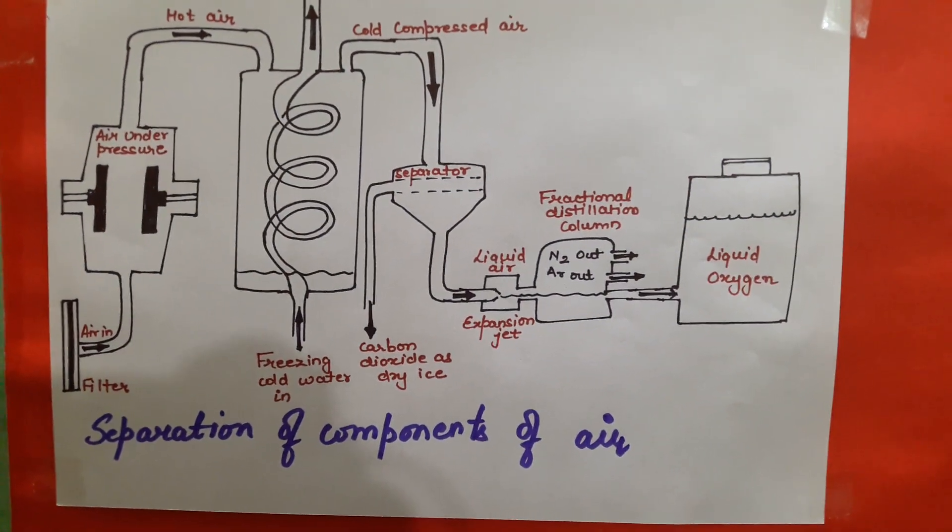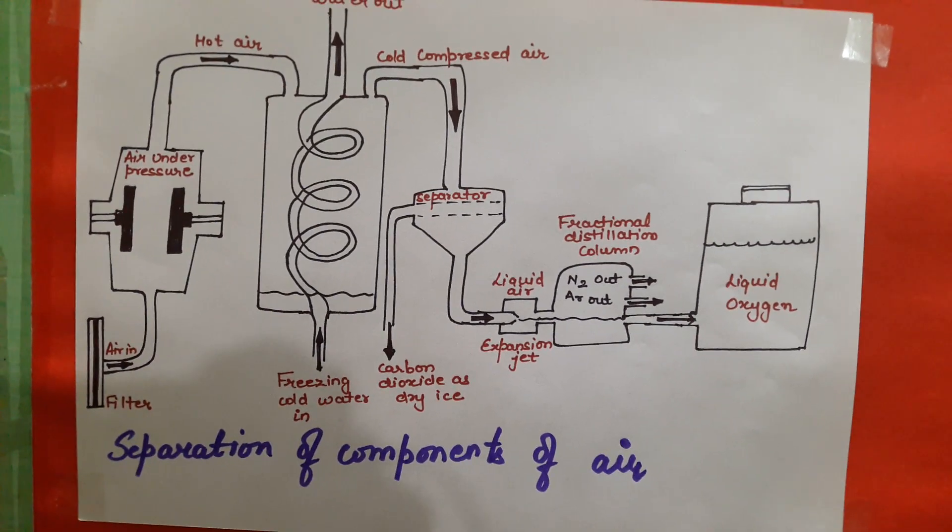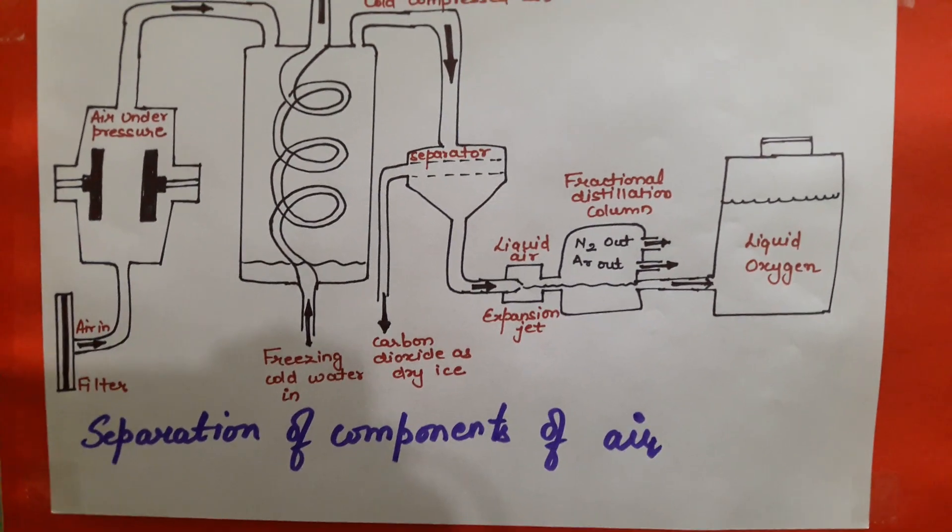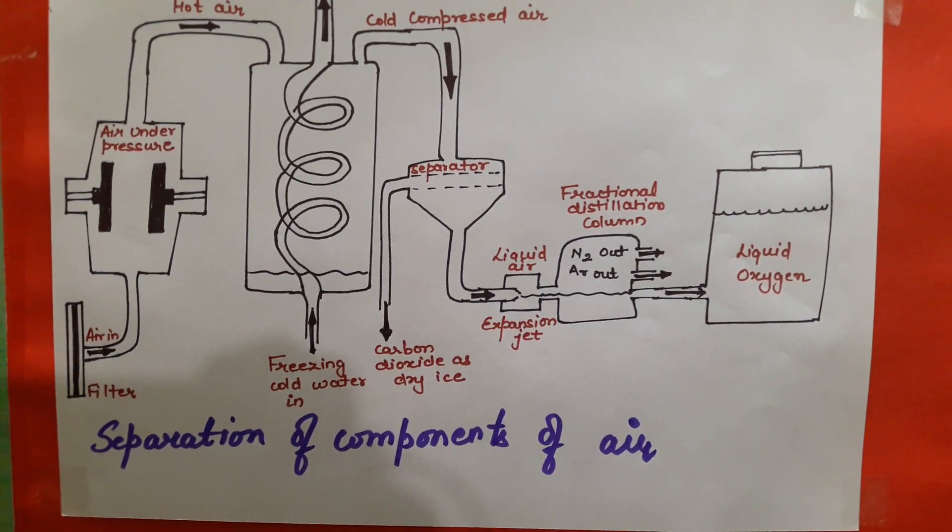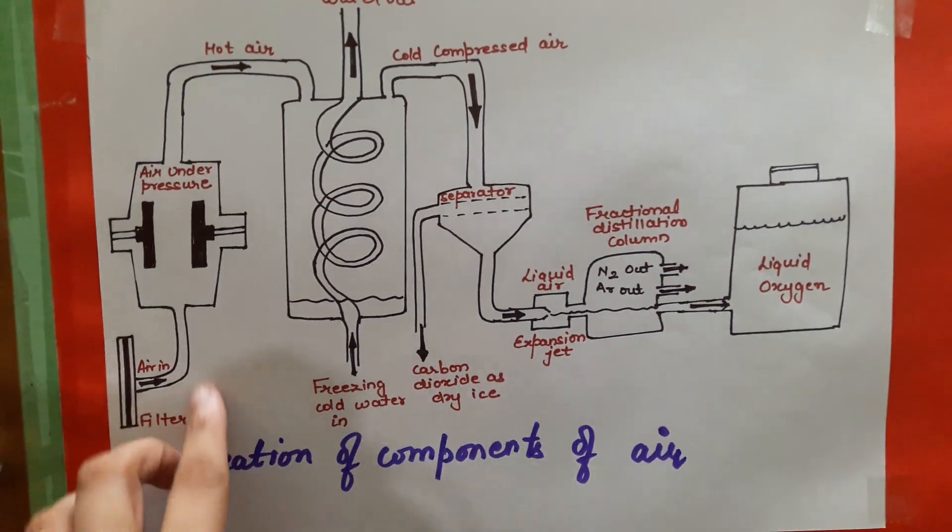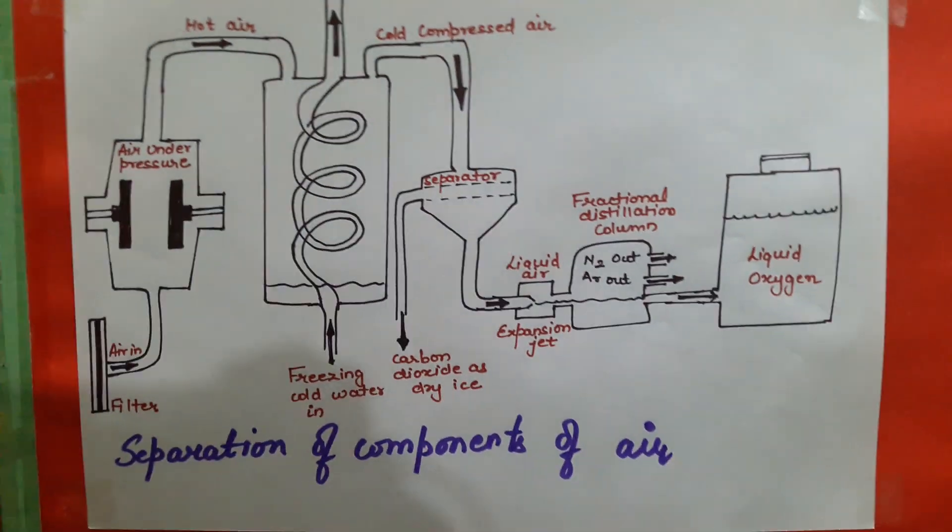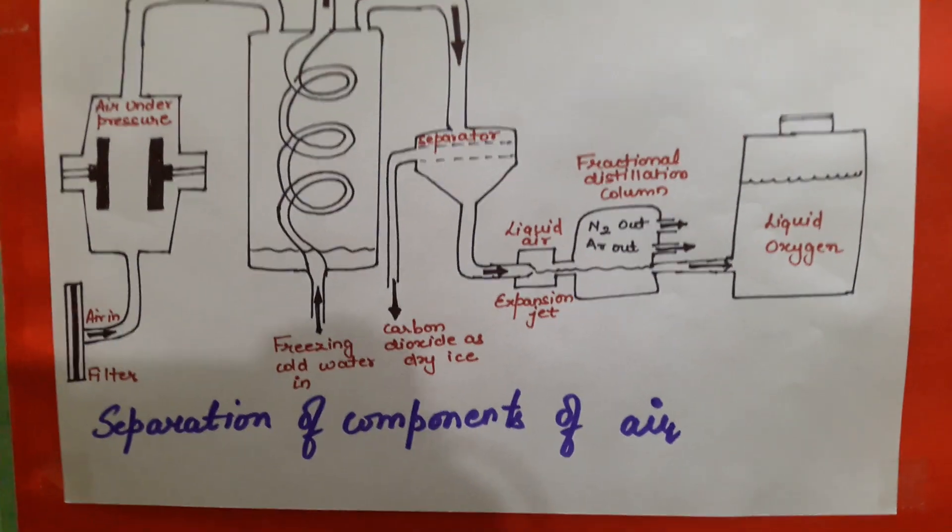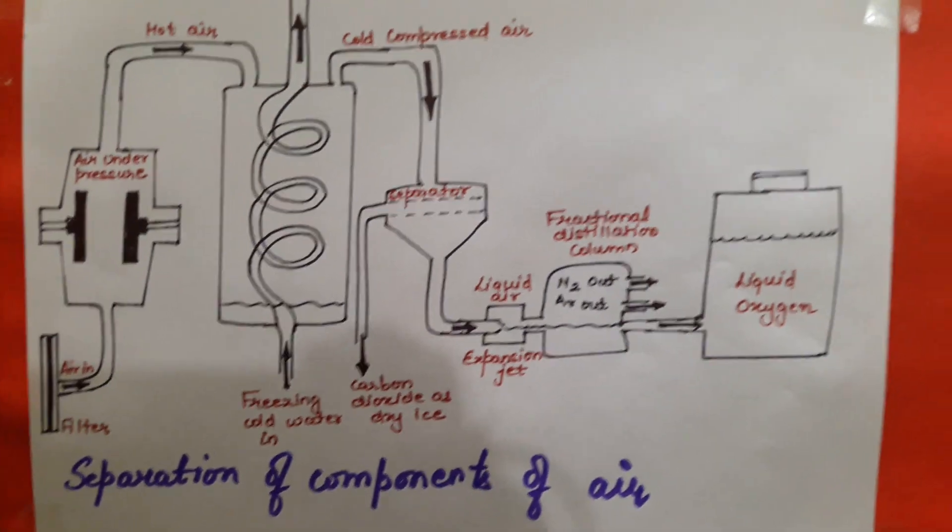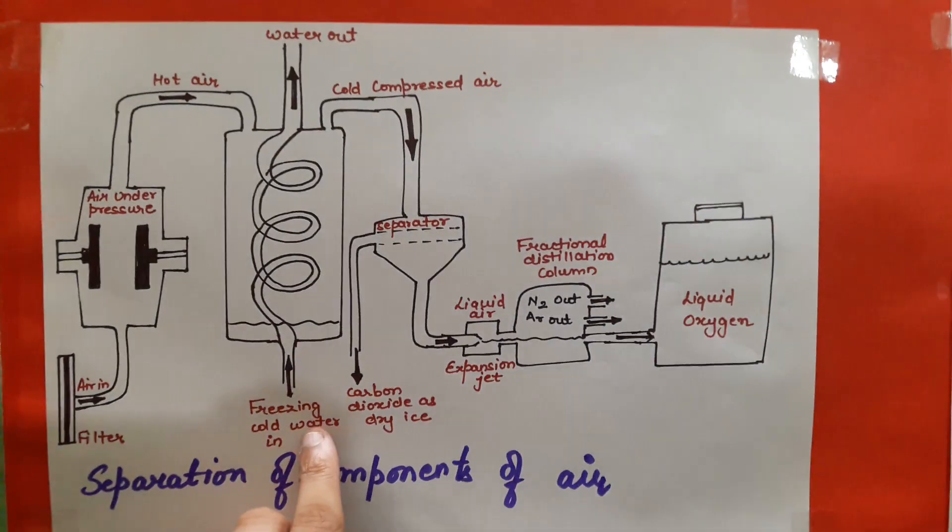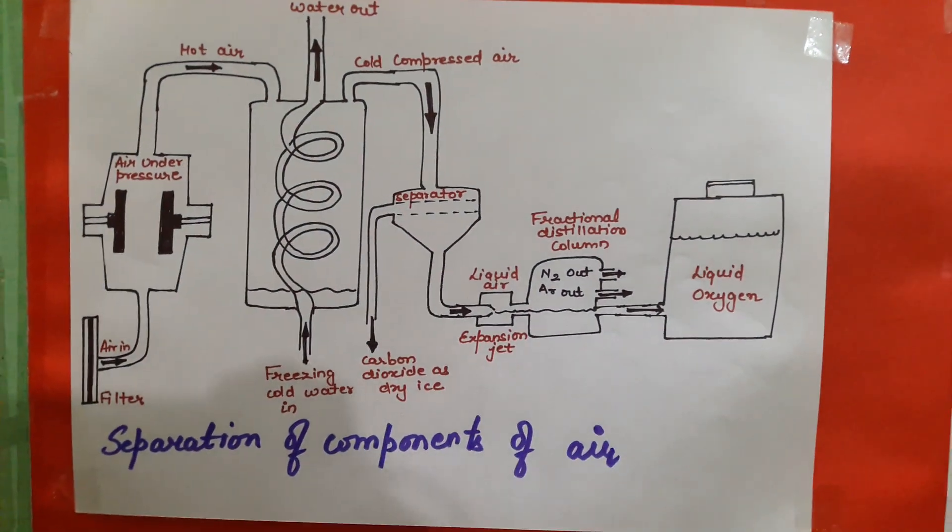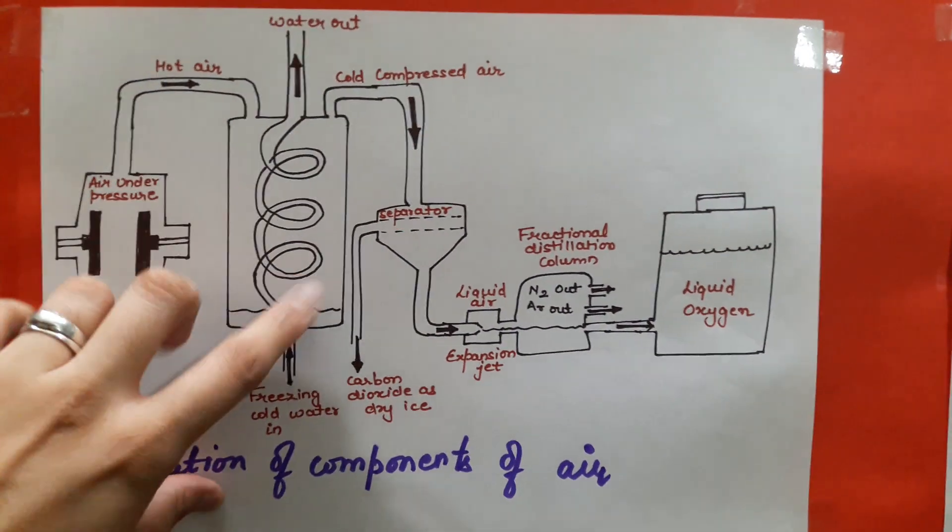This is the proper technique of separation of components. See, first one is a filter where air is filtered. After that, it goes into the pressure zone where the pistons compress it. It gets pressurized and starts to change into liquid form. After that, the air gets warm, so cold water is used in the pipes to cool the hot air and convert it into liquid form.